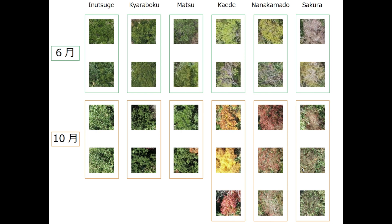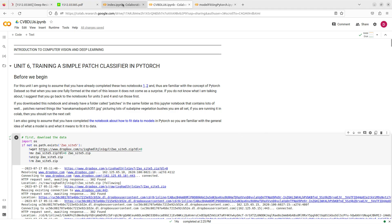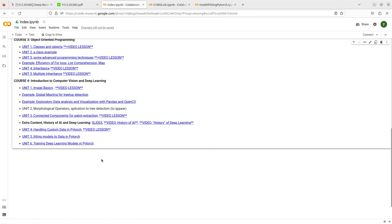Additionally, if you look at the data you will see that we had two data collection missions — one in June and one in October. In June, many of the bushes looked very similar because the evergreen and deciduous bushes were all more or less green with subtle color differences. In October, the deciduous bushes had changed color, so the differences were much easier to spot.